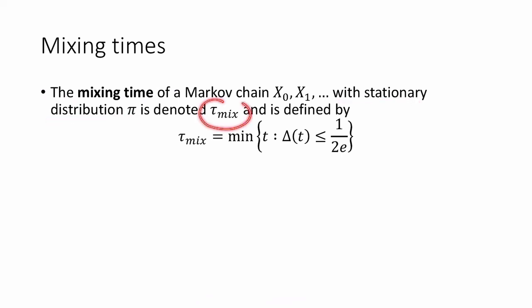I'm going to denote this τ_mix, and I'm going to define it as τ_mix is the minimum over all t so that Δ(t) is less than or equal to 1 over 2e.